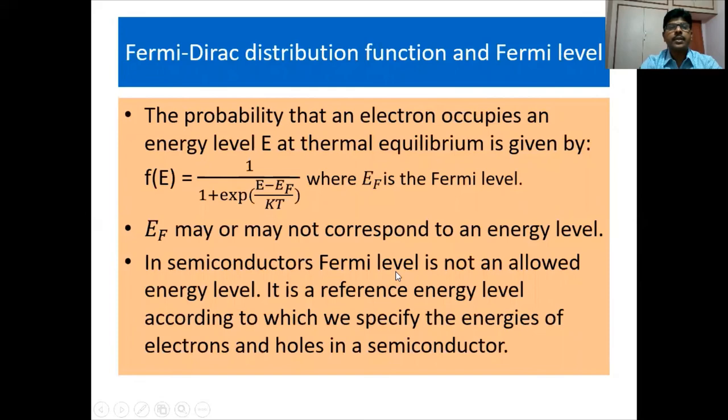Next, we can see what is the Fermi-Dirac distribution function and Fermi level. The probability that an electron occupies an energy level E at thermal equilibrium is given by F(E) = 1 / (1 + exp((E − EF) / kT)), where EF is the Fermi level. It should be understood that the Fermi level EF may or may not correspond to an actual energy level. In semiconductors, the Fermi level is not an allowed energy level.